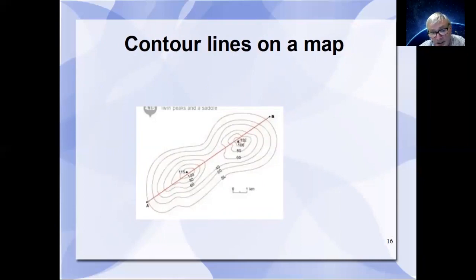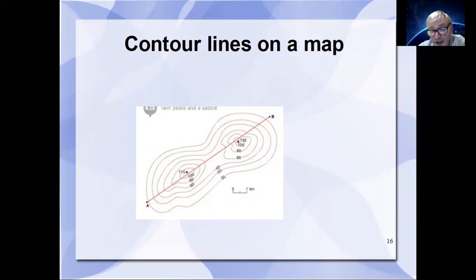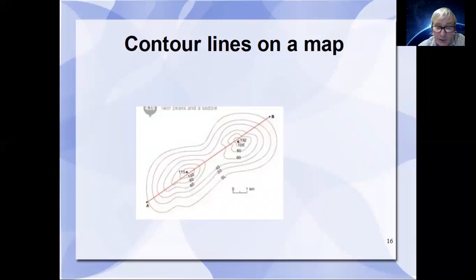On this diagram, going from A to B, you rise from A to a point marked 115, then descend to a saddle — perhaps about 50 — before rising back up to a second peak marked 132, which is clearly higher than the first, then going back down the slope towards B. This gives a very good idea of the terrain profile when walking that route.